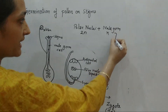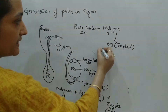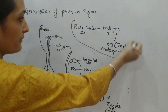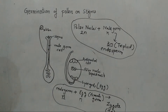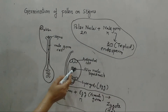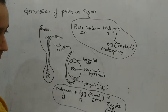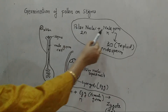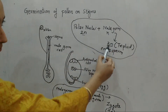The second male germ cell reacts with the polar nuclei, which is 2n in number, forming a 3n triploid nucleus. This is also known as the endosperm. These are the two major types of fertilization — that is why this process is called double fertilization. One fertilization is with the polar nuclei and one fertilization is with the egg.